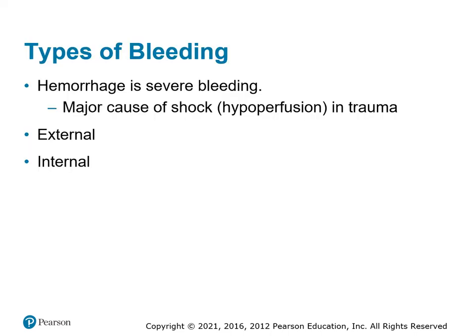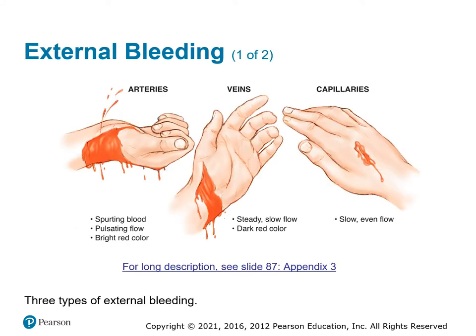Hemorrhage is severe bleeding and can be internal or external. The good thing about bleeding is it all stops eventually — our goal is to stop it before it becomes critical. Arterial bleeding is bright red and spurting, pulsating with each heartbeat because it's high pressure. Venous bleeding is darker, low pressure, and flows steadily rather than spurting. Arteries and veins run close together, so you could have both types simultaneously.